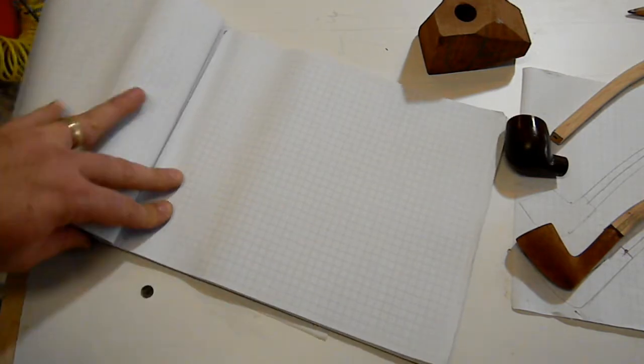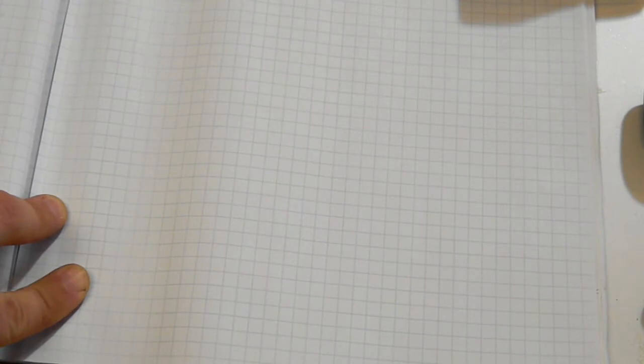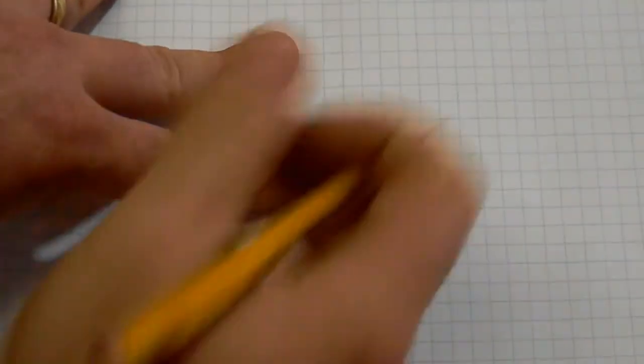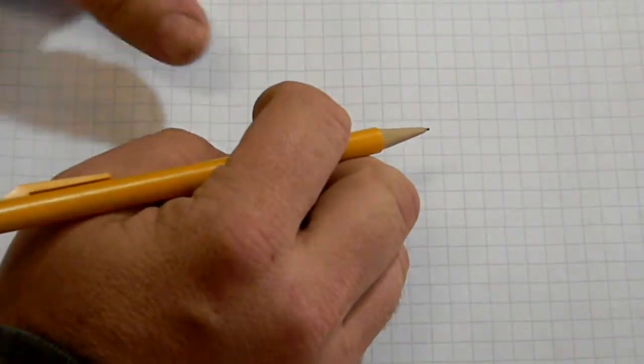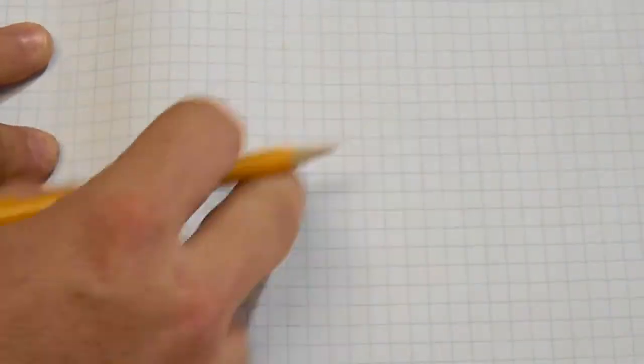All right, so what do we do whenever we're starting a chess set? Well, we have to decide what the dimensions are going to be. The dimensions of a chess set are always determined by the board size and the king height. So you either decide what size board you want or what size king you want to have on that board, and they relate to each other directly. The king is always twice whatever your square size is. So if you have a two-inch square, you're going to have a four-inch king and so on.